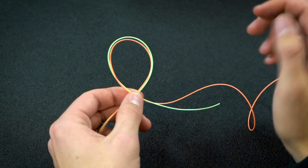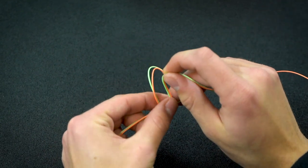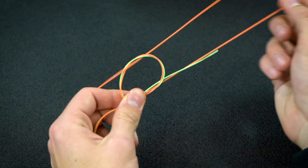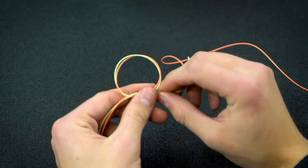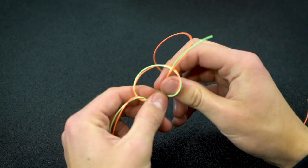Pinch these where they cross and then we're going to take those tag ends of tippet or leader, pass them through that loop to create an overhand knot once and twice.